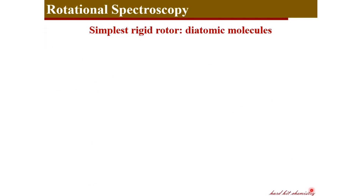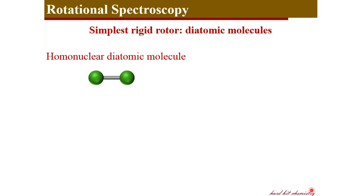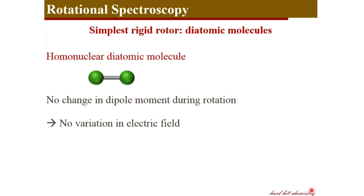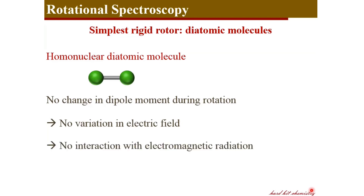The simplest case of a rigid rotor is diatomic molecules, which are of two types: homonuclear and heteronuclear. Homonuclear diatomic molecules are non-polar with zero dipole moment, and during rotation they do not generate a change in dipole moment. That means there is no electric field variation during rotation, so these molecules cannot interact with the electric field component of the electromagnetic spectrum and will not give rise to a microwave or rotational spectrum.